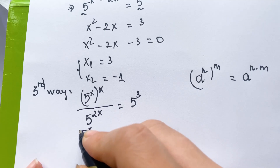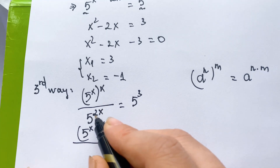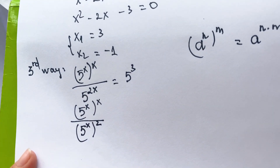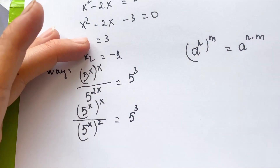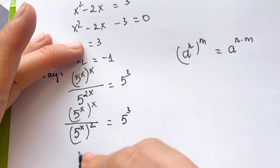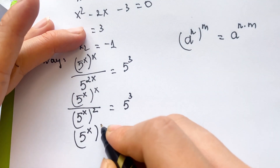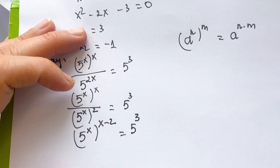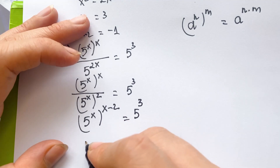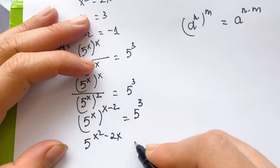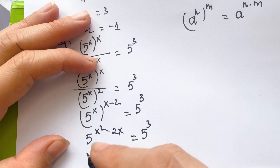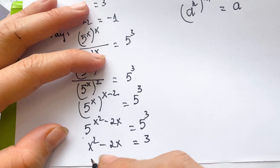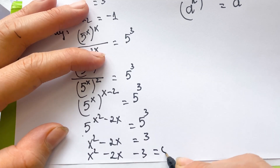So 5 power x, whole power x, equals 5 power 2x. We can rewrite 5 power x, whole power x, as 5 power x, whole squared, and that equals 5 cubed. Then applying the rule, 5 power x times x minus 2 equals 5 cubed, so x squared minus 2x equals 5 cubed. Since it's the same base, x squared minus 2x equals 3, which gives x squared minus 2x minus 3 equals 0.